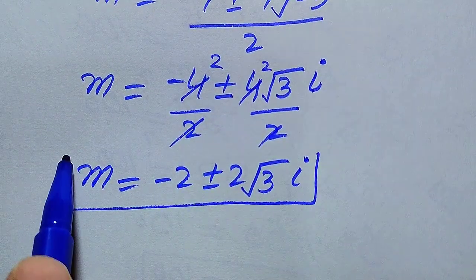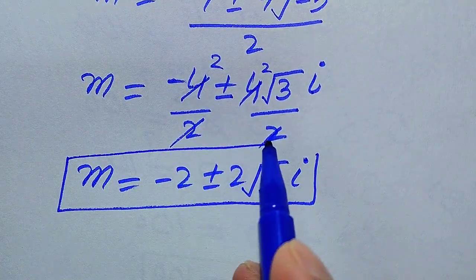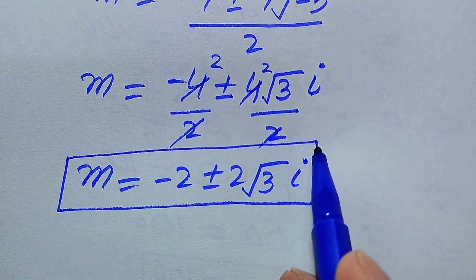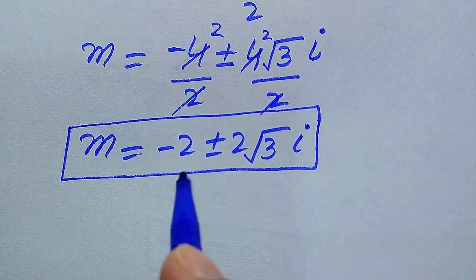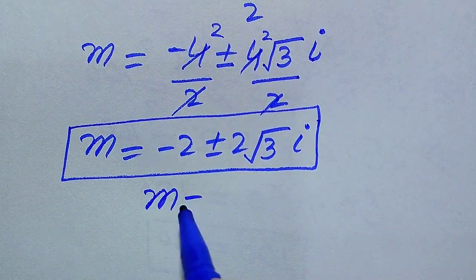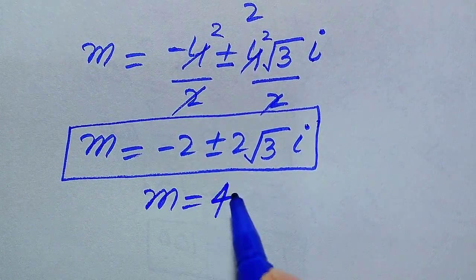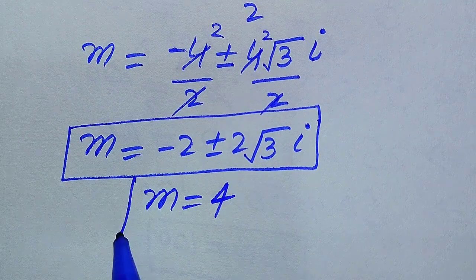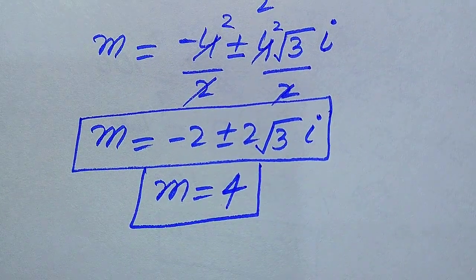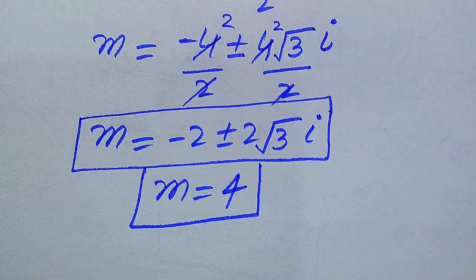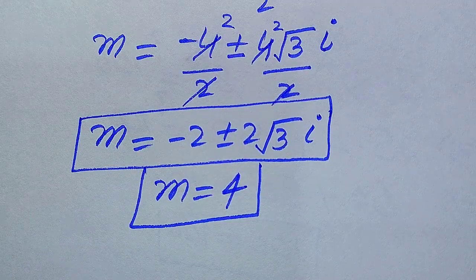These are the other two complex roots of the given equation. In this question we have only one real root, m equals 4. These are the three roots of the given equation. This is the final answer. Thank you so much for watching this video — please subscribe to my channel for more exciting videos.